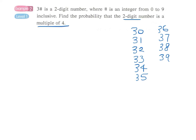We check whether each number is divisible by 4. We can see that 32 and 36 are multiples of 4, and there's no more. So the probability that the number is a multiple of 4 is...